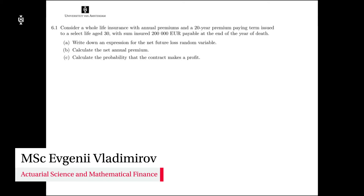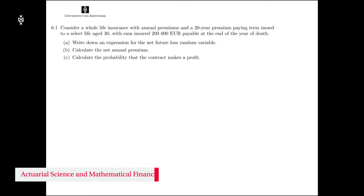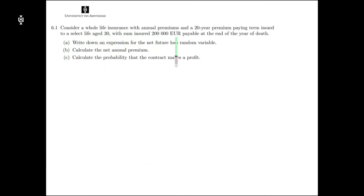Hello. In this exercise we consider a whole life insurance issued to a select life age 30. The insured sum is 200,000 euros payable at the end of the year of death. We also know that the premiums are paid annually and for a term of 20 years.